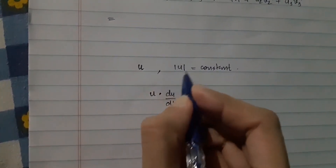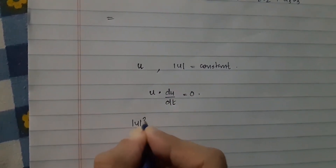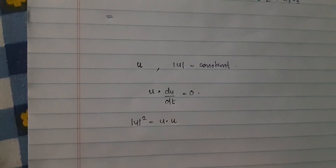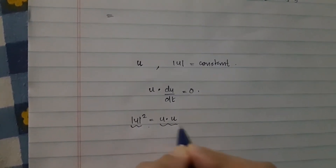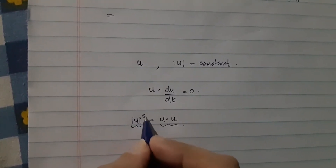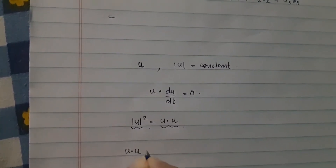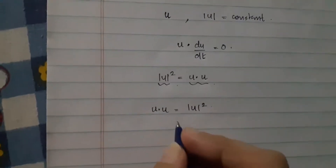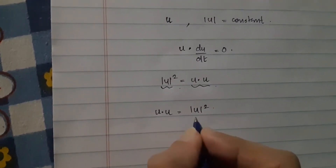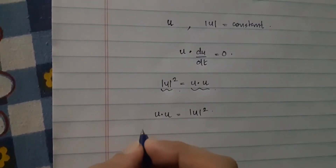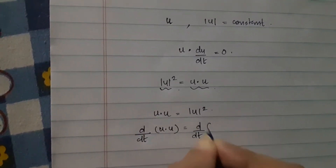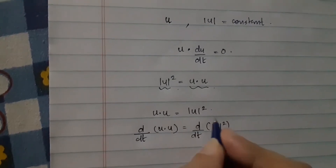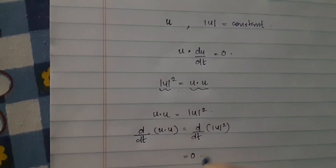If modulus u is constant, we know that modulus u squared can be written as u dot u. So if modulus u is constant, then u dot u should also be constant because modulus u squared will also be a constant. So u dot u equals mod u squared. If we differentiate both sides with respect to t, we get d/dt of (u dot u) equal to d/dt of modulus u squared. Since this is a constant, the right-hand side will become 0.